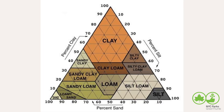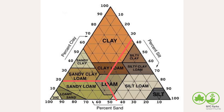Then you can use a tool like this to see what kind of soil you have. In the jar in the previous image, the soil had 20 percent clay, 35 percent silt, and 45 percent sand. So we'd categorize that as a loam — nice for gardening.